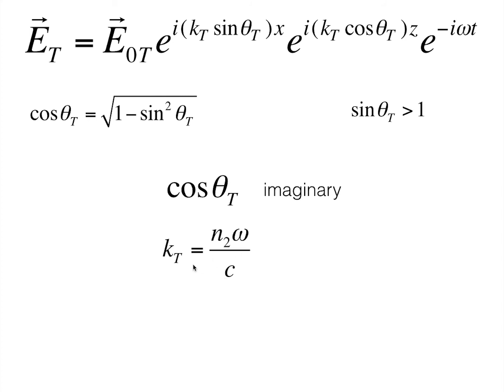which are all real numbers, kt is also a real number, which means that the product of kt and cos theta t is an imaginary number. We may represent this as kt cos theta t is equal to a times i, where a is some constant.